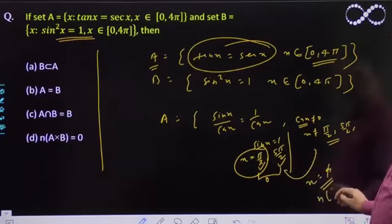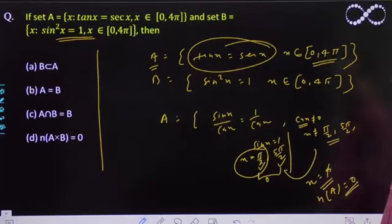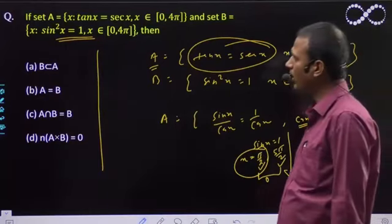So the number of elements in set A is 0. Number of elements in A is 0.